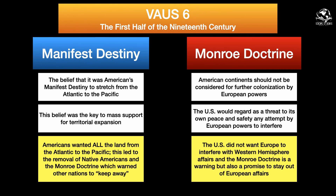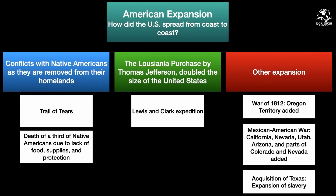The key concept of this unit is American expansion: how did the United States spread from coast to coast, and what happened because of it? First, conflicts with Native Americans as they are removed from their homelands led to the Trail of Tears, in which many American Indians were literally uprooted from their ancestral homelands and died because of lack of food supplies and protection.